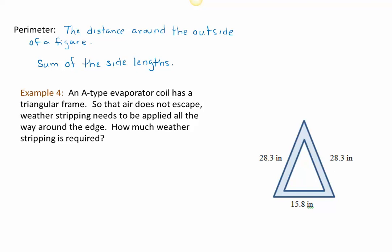We want to put weather stripping around this frame so the air doesn't escape. The question of how much weather stripping is required isn't about whether you know to add up these three numbers. The question is: do you recognize that you're calculating a perimeter? As we go around the edge of this triangle, the amount of weather stripping we need equals the triangle's perimeter. On the left side, we need 28.3 inches; on the right side, another 28.3 inches; and on the bottom, 15.8 inches. We add those up and find that we need 72.4 inches of weather stripping.